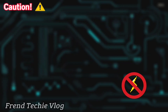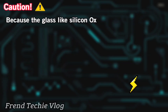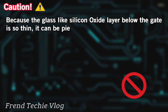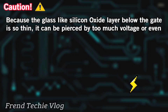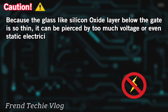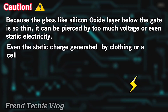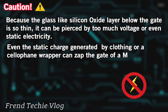CAUTION: Because the glass-like silicon oxide layer below the gate is so thin, it can be pierced by too much voltage or even static electricity. Even the static charge generated by clothing or a cellophane wrapper can damage the gate of a MOSFET.